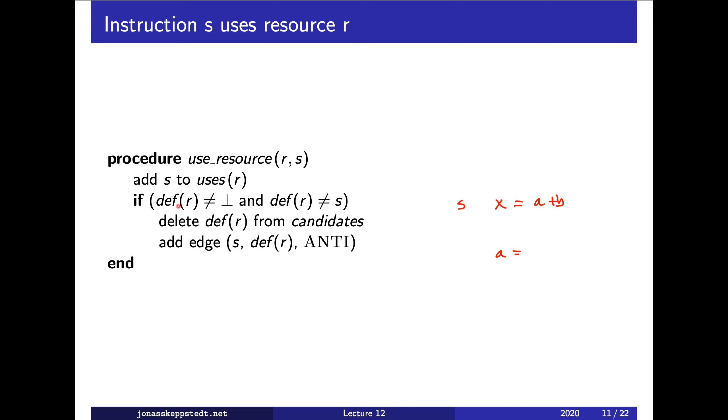And then we check if there is an instruction which defines a and it's not the same instruction as s. And then we delete that instruction—so we delete this one from the set of candidates—and we add an anti-dependence between them.